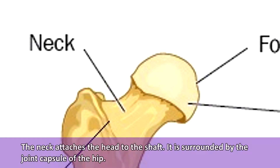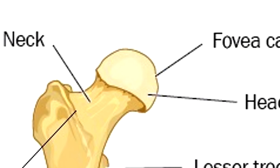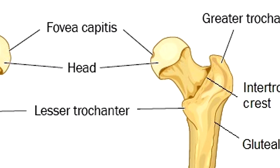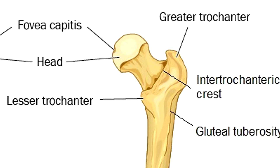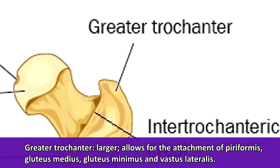Next, we have the neck of the femur, which attaches the head to the shaft, and it's going to be surrounded by the joint capsule of the hip. You'll also notice two trochanters, which are irregular bony protuberances on the femur. The greater trochanter is that larger bony process — located laterally on the femur — and allows for the attachments of muscles such as the piriformis, gluteus medius, gluteus minimus, and vastus lateralis.